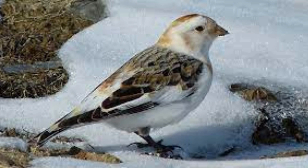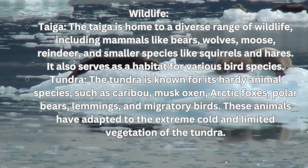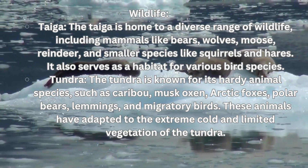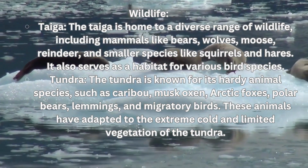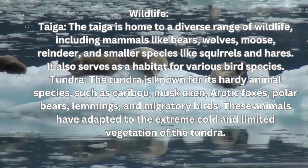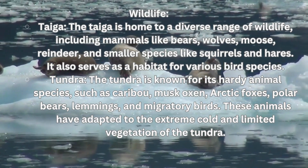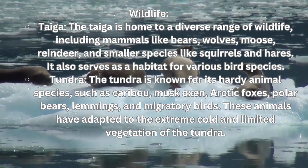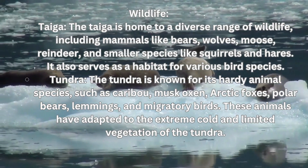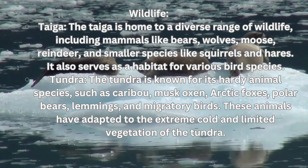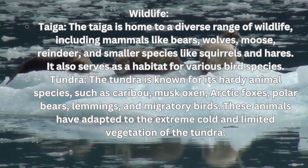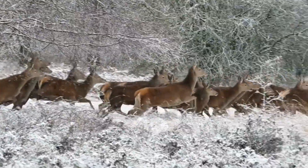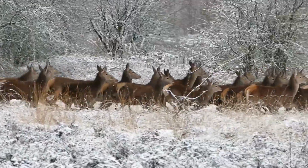Wildlife comparison: The taiga is home to a diverse range of wildlife including mammals like bears, wolves, moose, reindeer, and smaller species like squirrels and hares, as well as various bird species. The tundra is known for hardy animal species such as caribou, musk oxen, arctic foxes, polar bears, lemmings, and migratory birds, all adapted to the extreme cold and limited vegetation.